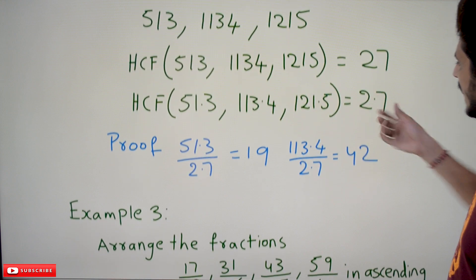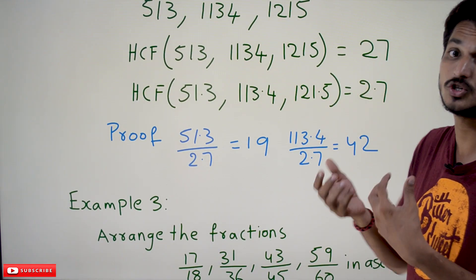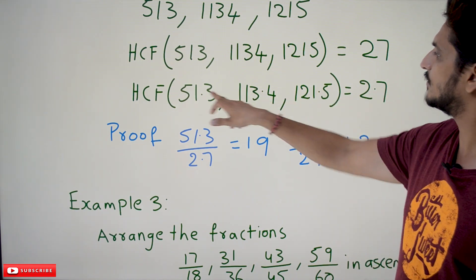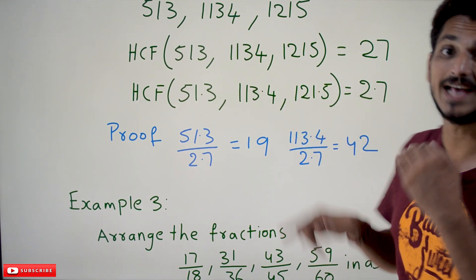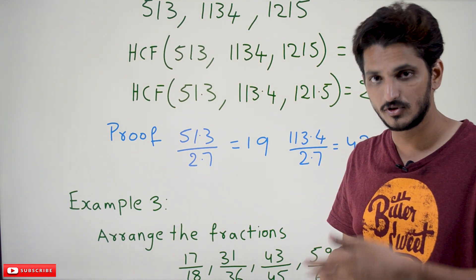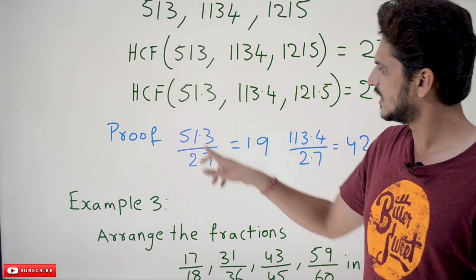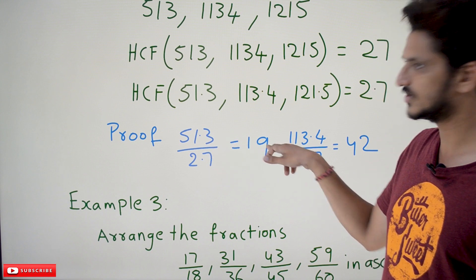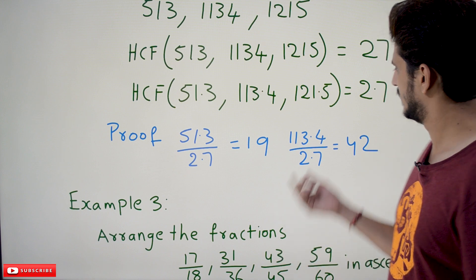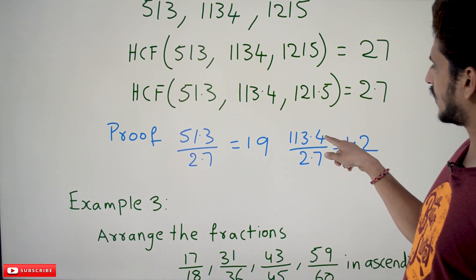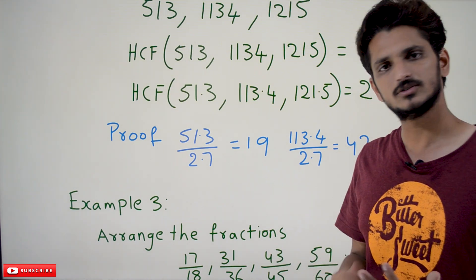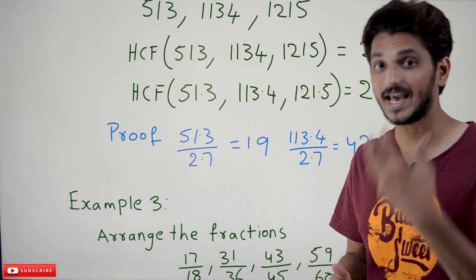What does this HCF value mean? HCF means highest common factor — it is a common factor for these three values, meaning all the numbers should be divisible by this number exactly. Let's verify: 51.3 divided by 2.7 is 19 — it divides exactly. 113.4 divided by 2.7 is 42. Similarly, the remaining values also divide exactly.